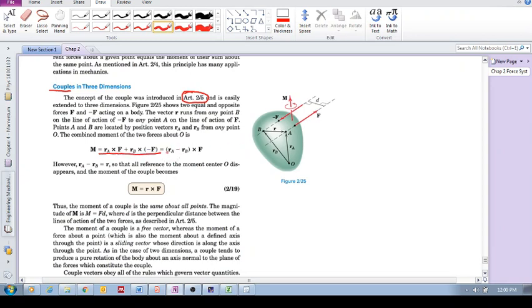This ends up as RA minus RB, which is simply R, the position vector from any point along the line of action of one force to any point along the line of action of the other force. The moment of a couple is the same about all points, so it is independent of the reference point.